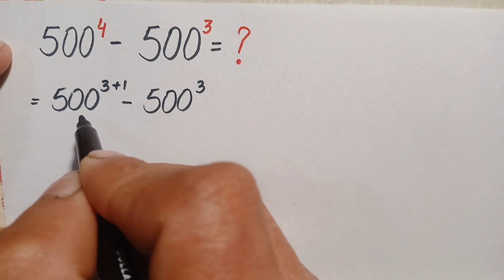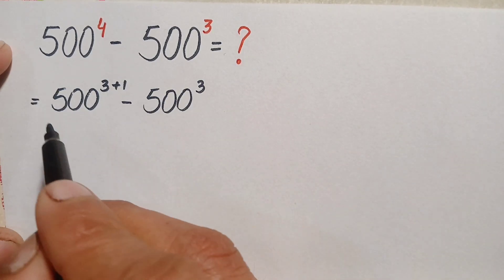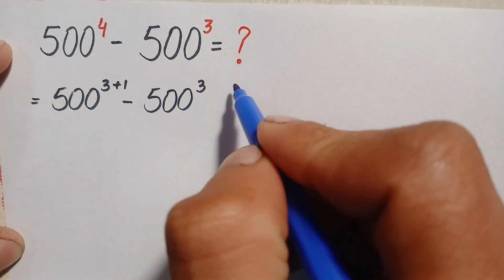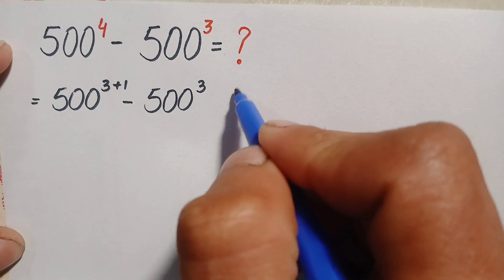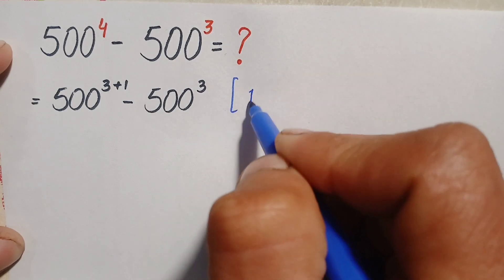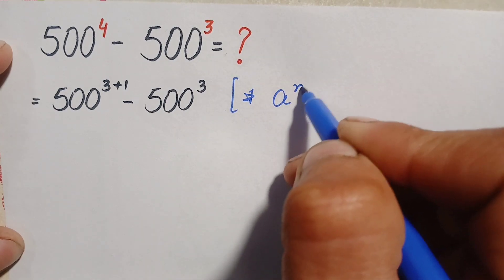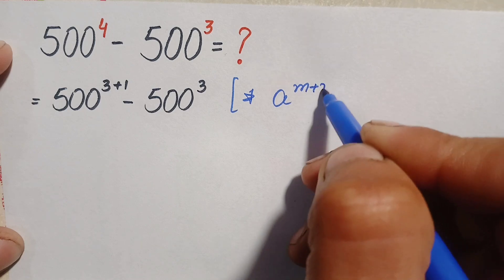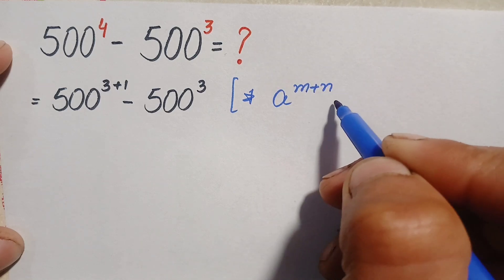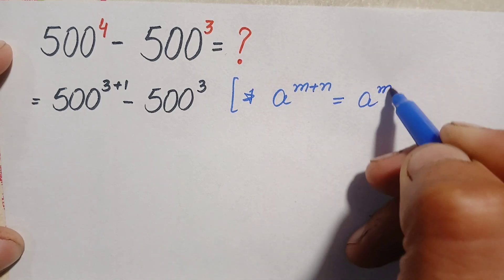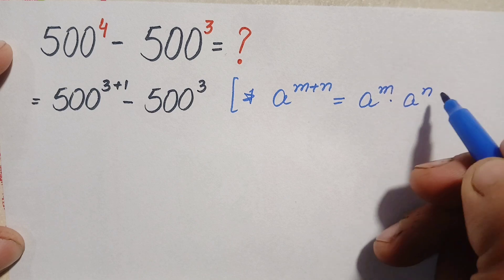In the first number we will use the exponential identity: a raised to the power m plus n, which can also be written as a raised to power m times a raised to power n.